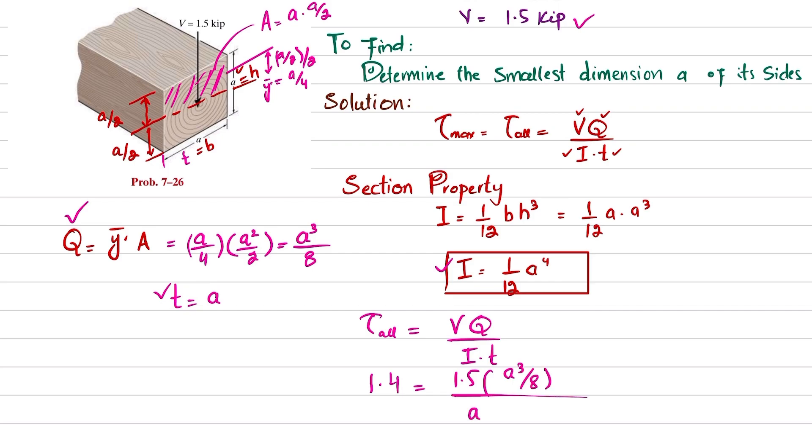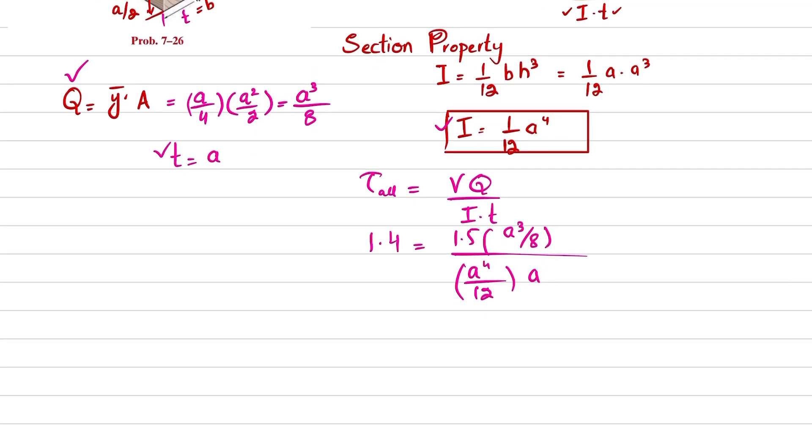From here you will get 1.5/8·a³ divided by a⁵/12 equals 1.4. So when you solve it for a, you will get a is equal to 1.27 inches, and this will be the answer.